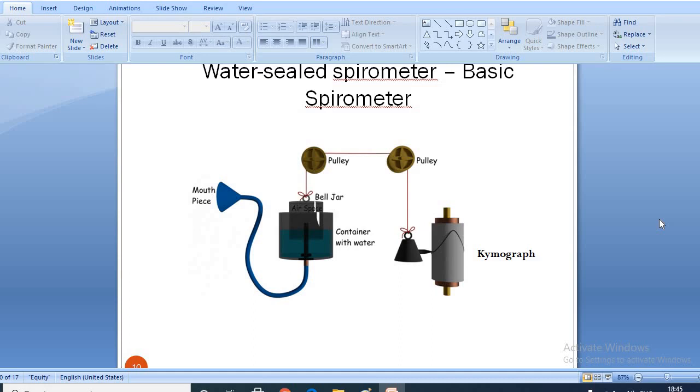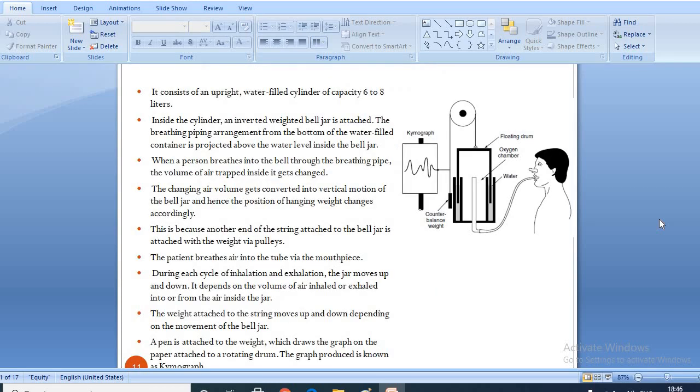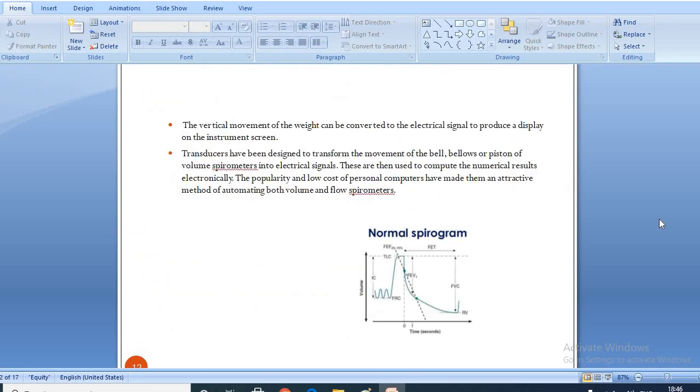Transducers have been designed to transform the movement of the bell, bellows or piston of volume spirometers into electrical signals. These are then used to compute the numerical results electronically. The popularity and low cost of personal computers have made them an attractive method of automating both volume and flow spirometers. The graph shows a normal spirogram.